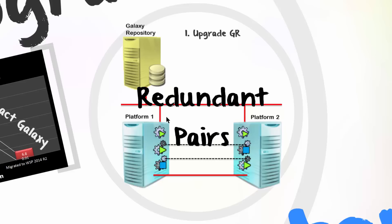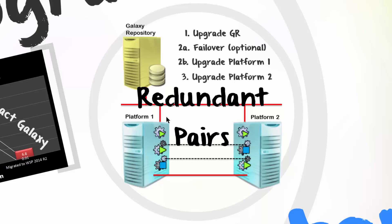Upgrade of a redundant pair is a simple three-step process. First, as usual, the Galaxy repository must be upgraded. Second, you must prepare one of the redundant pairs to be the active running environment by ensuring all engines are active in that platform. You will then upgrade the other standby pair. Third, once upgraded, this redundant pair will become active and you can then upgrade the partner platform.